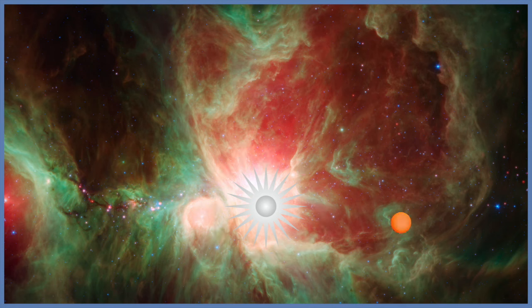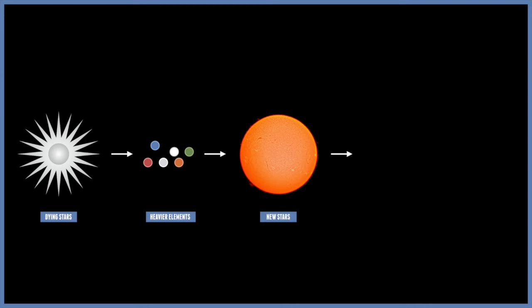The next generations of stars then forms from these enriched mixtures of elements, and therefore so do planets. It took several generations of stars to enrich our neighbourhood so that when the Sun and the Earth were formed five billion years ago, they would contain enough of the heavier atoms to make living creatures.